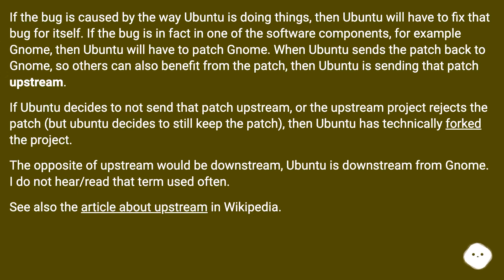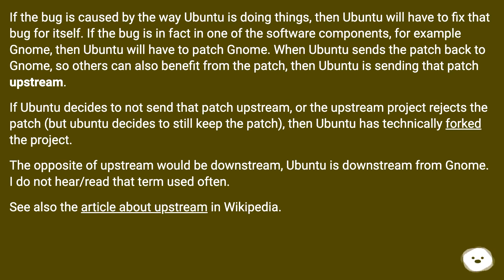If the bug is in fact in one of the software components, for example GNOME, then Ubuntu will have to patch GNOME. When Ubuntu sends the patch back to GNOME so others can also benefit from the patch, then Ubuntu is sending that patch upstream. If Ubuntu decides to not send that patch upstream, or the upstream project rejects the patch but Ubuntu decides to still keep the patch, then Ubuntu has technically forked the project.